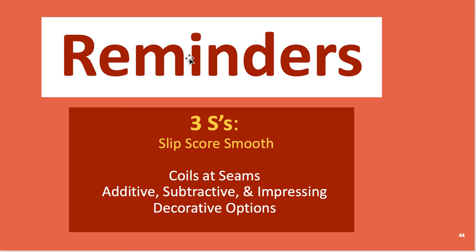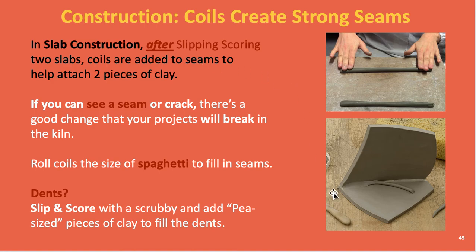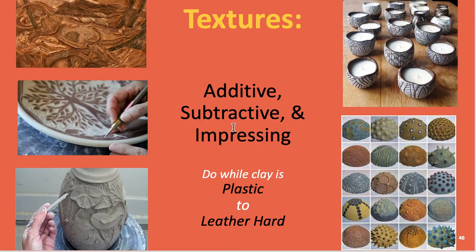Reminders: the three S's — slip, score, smooth — apply when using coils, seams, additives, subtractive techniques, and impressing decorative options. If you see a big seam, put a coil in it — only use one the size of spaghetti. For dents, add pea-sized pieces of clay. Textures are a wonderful way to make your project more complex; these are made with the back end of a paintbrush or pencils. Sgraffito is where you scrape away and carve in. Some designs are additive — we measured off and created a repeating design.